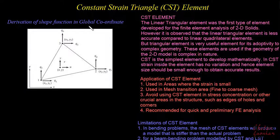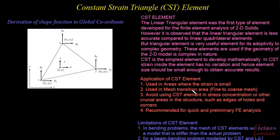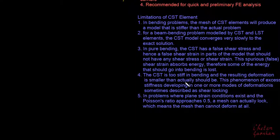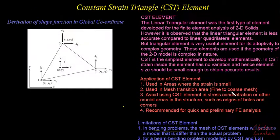Let us derive the shape functions of the CST element in global, local, and natural coordinates. Before that, here is a brief note on the CST element, including its applications — where we can use it and where we should avoid it. There are some limitations, especially observable in bending problems where mesh locking takes place, mostly in materials with a Poisson's ratio approaching 0.5. Nevertheless, because of its simplicity, this element is widely used for quick and preliminary FE analysis.